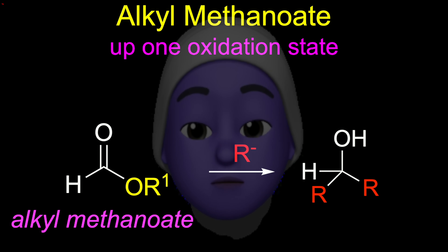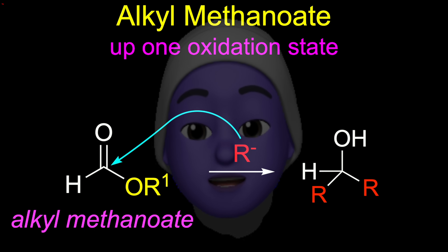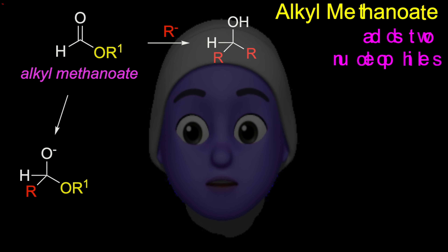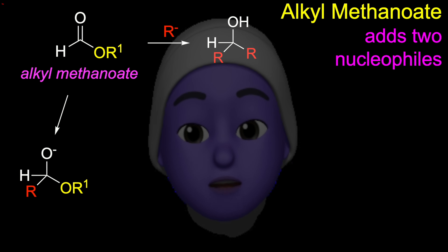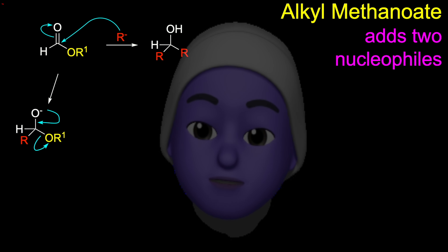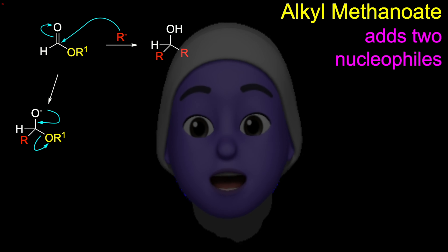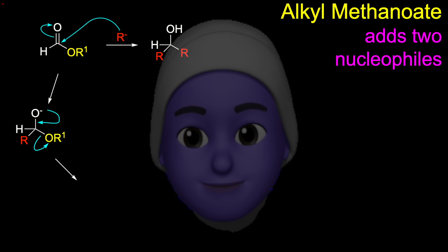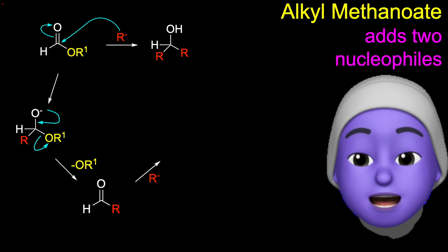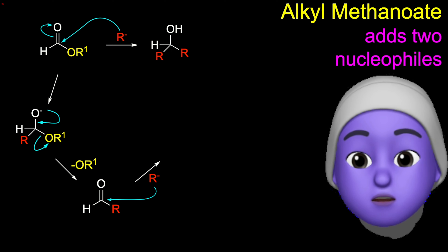Let's climb up one oxidation state to use an alkyl methanoate — that's an ester of methanoic acid — as the substrate. The carbon ion adds to the ester carbonyl — it's those two arrows again — but this time the electrons flow back, giving alkoxide. An aldehyde is produced; this is more reactive than the ester starting material, so another carbon ion adds immediately.